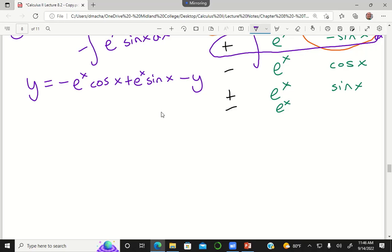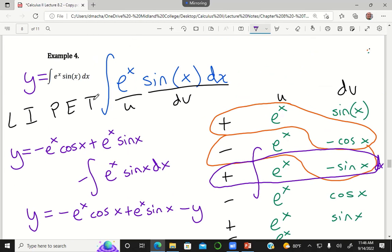So I move this y to the left side of the equation. That becomes 2y equals negative e to the x cosine x plus e to the x sine x. And now to solve for y, remember,